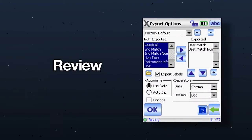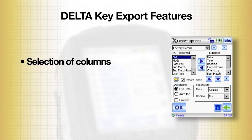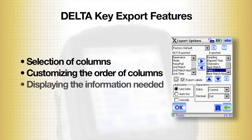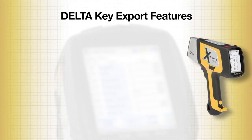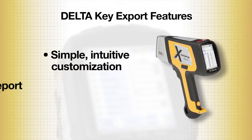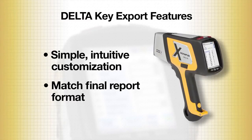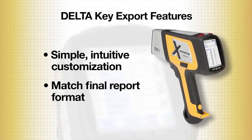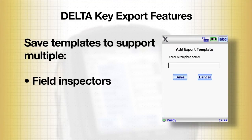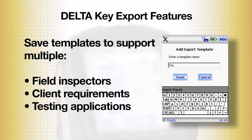To review, the key export features are selection of columns, customizing the order of columns, and displaying the information needed. Through simple, intuitive customization, you can make your export results match your final report format. Save the template to support multiple field inspectors, client requirements, and testing applications.